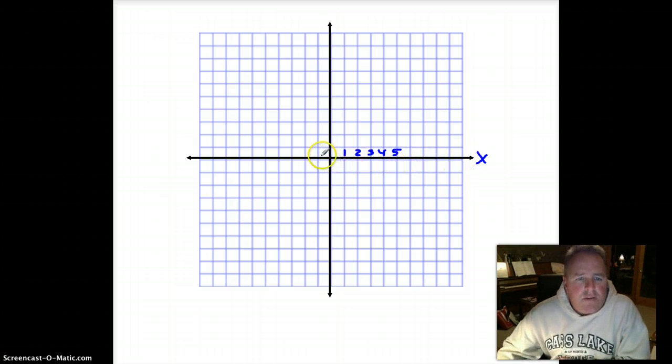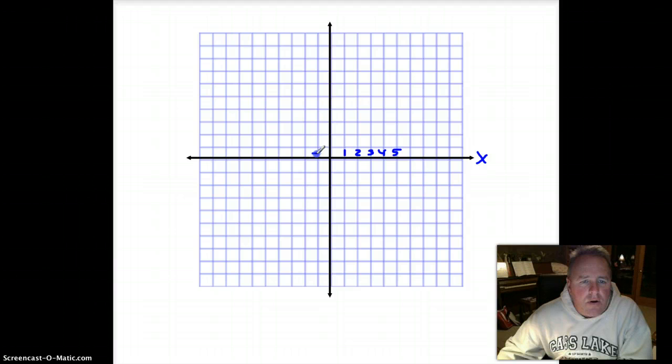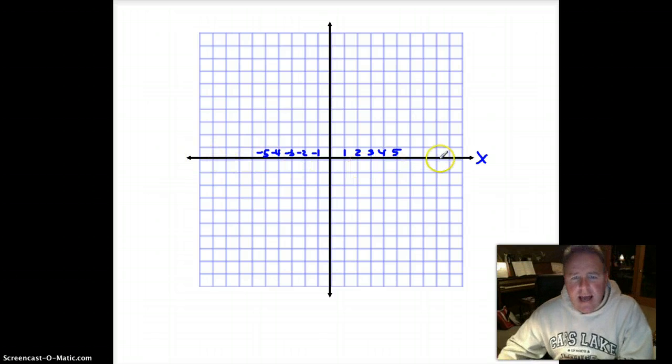And to the left of zero, we're going to go into negative numbers in this quadrant right here. And again, I'm going to stop at negative five, but I could keep going. So it's like a number line along your x-axis.